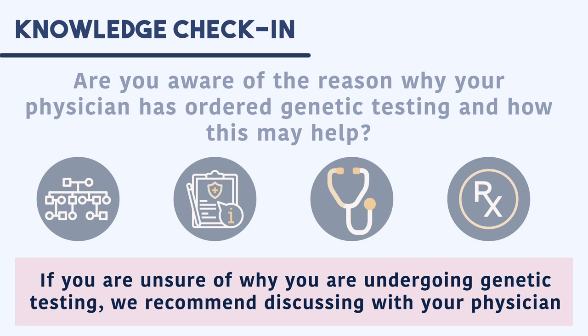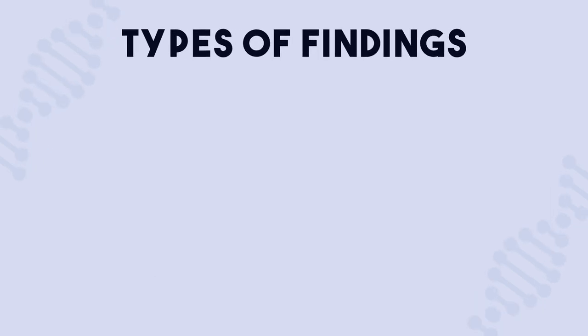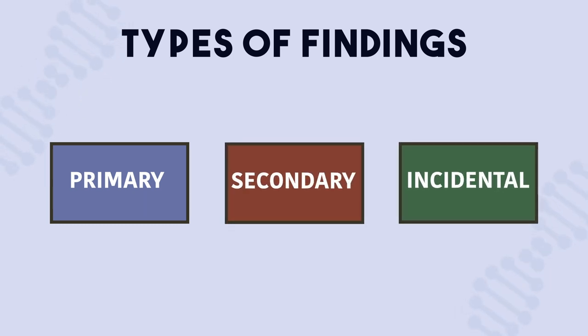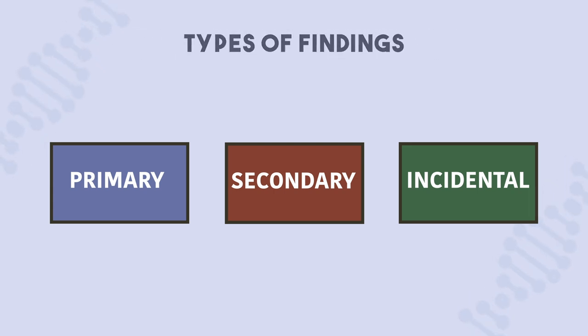Now that we have a general overview of some of the applications of whole genome sequencing, let's dive into the different types of findings that may be revealed as a result of analyzing your entire genome. When performing a genetic test, there are generally three groups of findings: primary, secondary, and incidental. To explain the differences between these groups of findings, we'll follow along with an example.